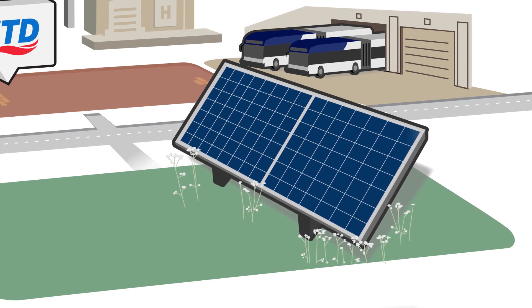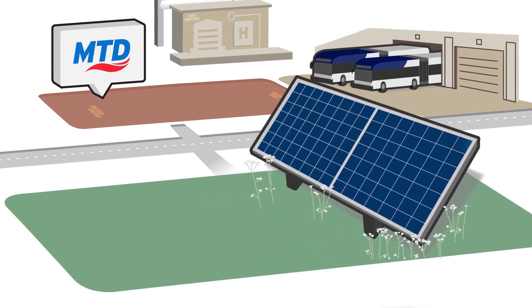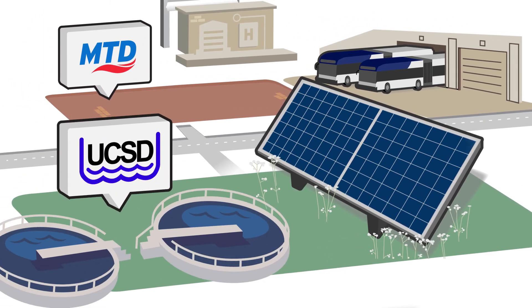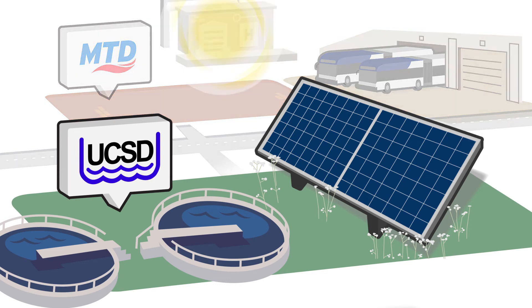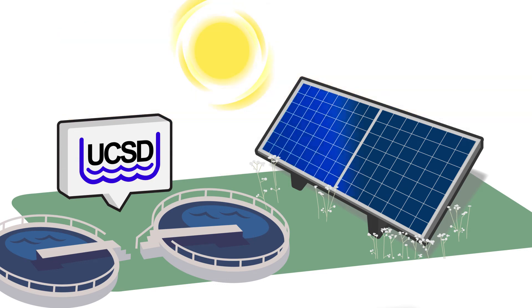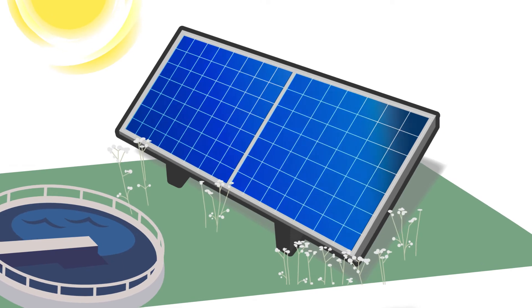MTD's expanded solar array is possible through a partnership with the Urbana and Champaign Sanitary District. Solar electricity flows from across the street to power our hydrogen fueling station and produce clean hydrogen fuel for our buses.